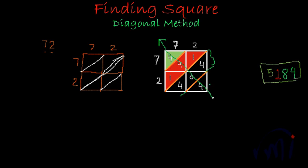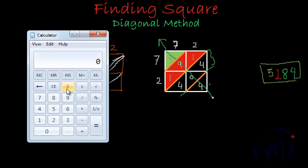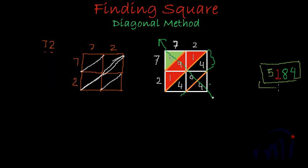Let's check our result using a calculator. We want to find the square of 72, so seventy-two multiplied by seventy-two gives us five thousand one hundred and eighty-four — and this is exactly what we got. So this was finding the square of a number when the number has only two digits.